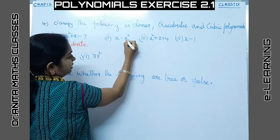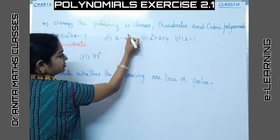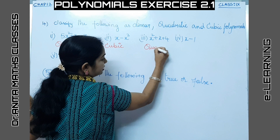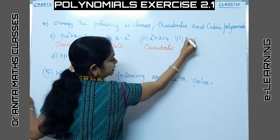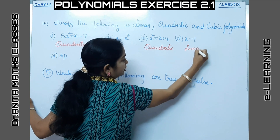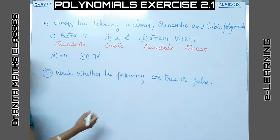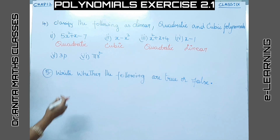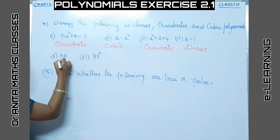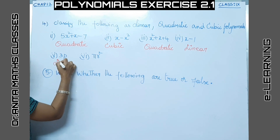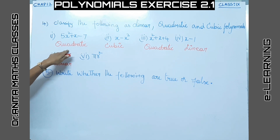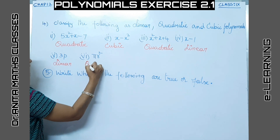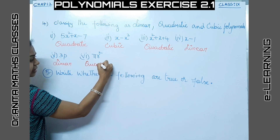The next expression has highest power 3, so it is a cubic polynomial. Then another is quadratic with degree 2. Then x to the power of 1, so it is a linear polynomial. Here the variable is p — 3p has degree 1, so it is a linear polynomial. Finally, r² is again a quadratic polynomial with variable r.